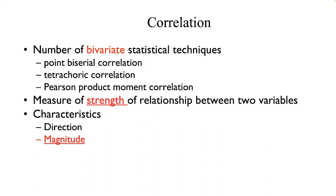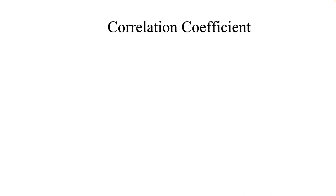A correlation has two characteristics: its direction and its magnitude. Its direction is determined by its sign — either positive or negative. Its magnitude is determined by how far away from zero it is. The correlation symbol is the lowercase letter r. A correlation ranges from positive 1 to negative 1. If it is positive, it indicates that as one variable increases, so does the other.